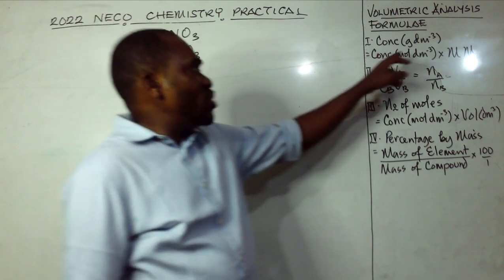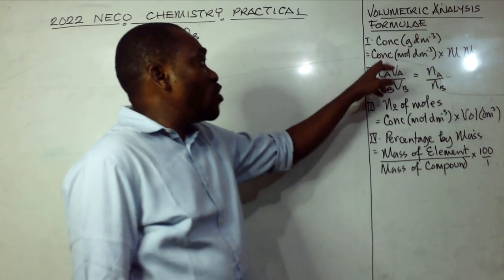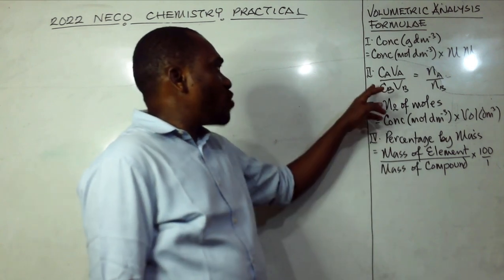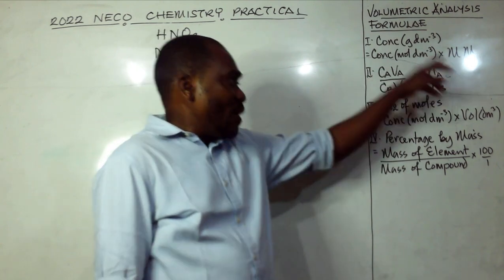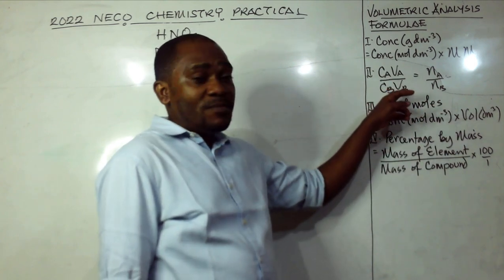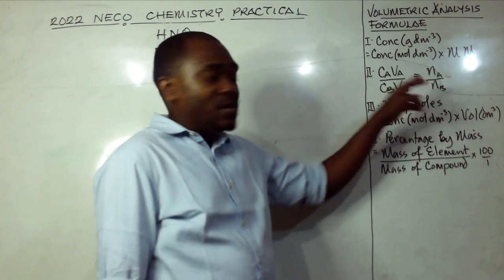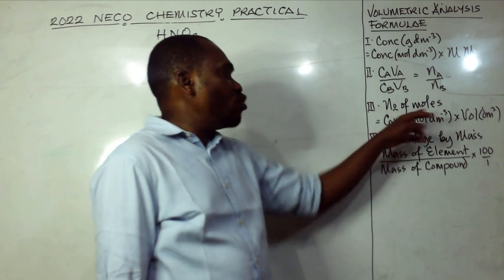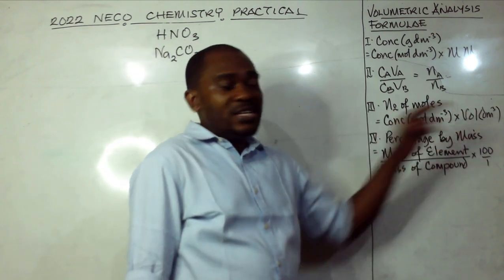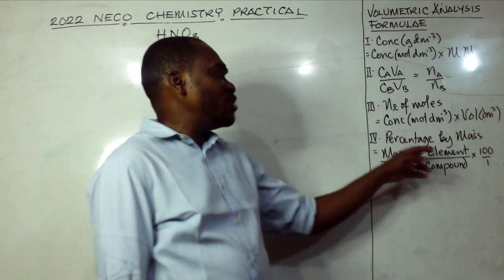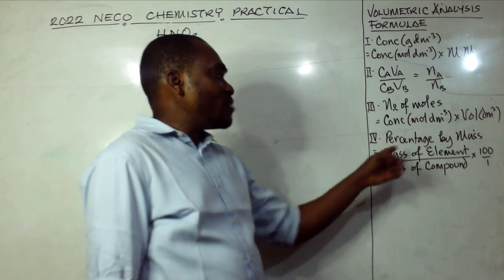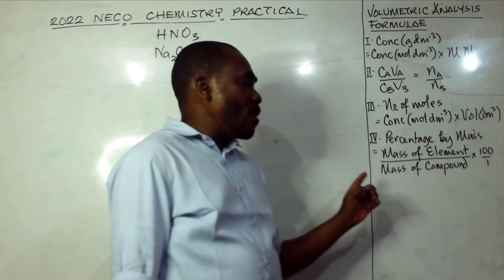The first formula is: concentration in grams per dm³ equals concentration in moles per dm³ times molar mass. The second is the titration formula: CAVA over CBVB equals nA over nB. The third is: number of moles equals concentration in moles per dm³ times volume in dm³. The last is percentage by mass of an element in a compound: mass of element divided by mass of compound times 100%.